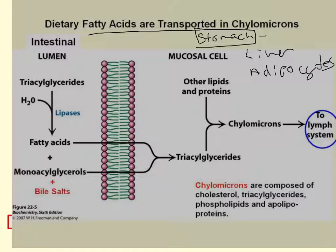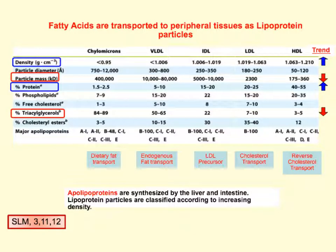Chylomicrons are composed of cholesterol, triglycerides, phospholipids, and apolipoproteins. The key thing is that chylomicrons are typically transported in the lymph system, not in the blood. Various lipoproteins are used to transport cholesterol and fatty acids.